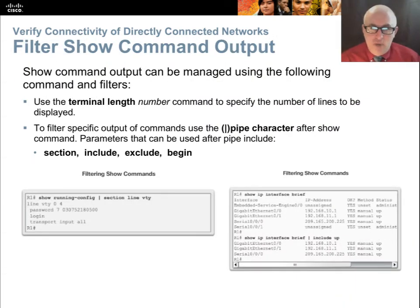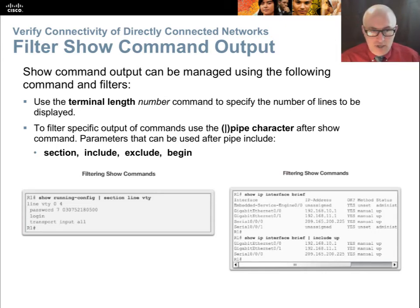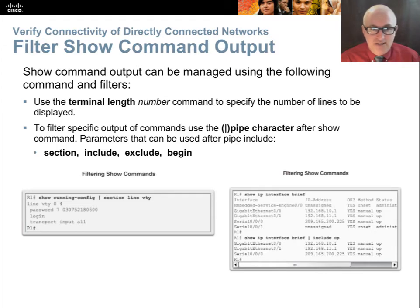We can use filters on lengthy configs — sometimes called a pipe — to specify a section using 'include,' 'exclude,' or 'begin.' We can jump right to a certain section. For example, to look at the VTY interface, type 'show running-config pipe section line vty' and go right to that part of the config. Cisco configs are slightly indented with different section titles, and once you learn those, adding the filter to your show command helps you jump right to the section instead of scrolling through the entire configuration.